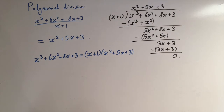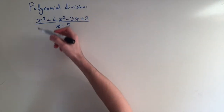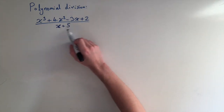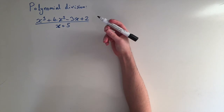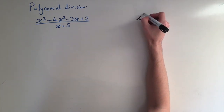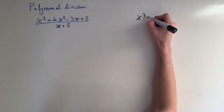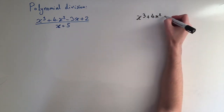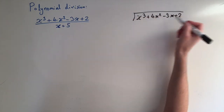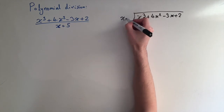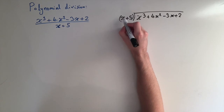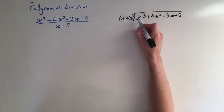For our second example it's a similar problem: we have a cubic and we want to divide it by a linear term. Give this a try yourself to make sure you understand the method. We write out the numerator, the cubic, which is x cubed plus 4x squared minus 3x plus 2. We draw the division symbol and we're dividing by x plus 5.